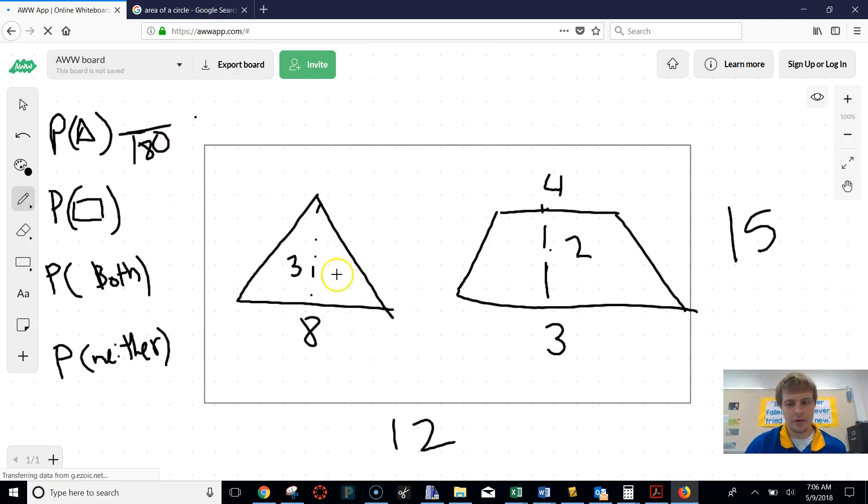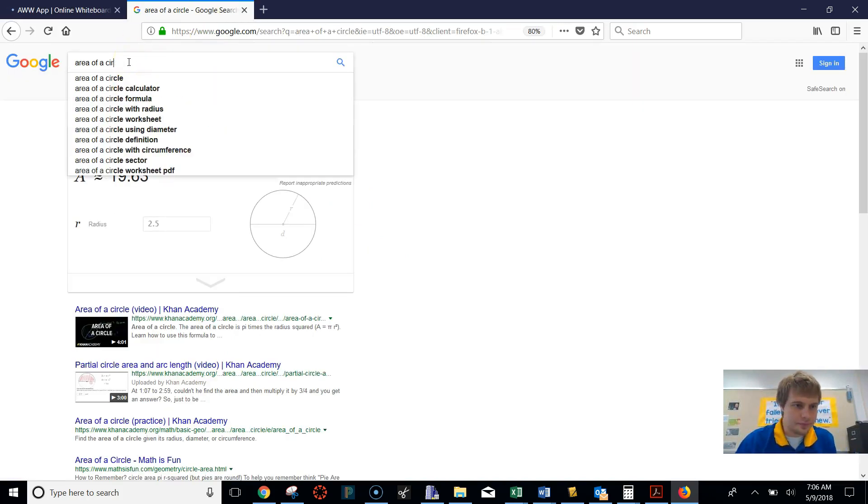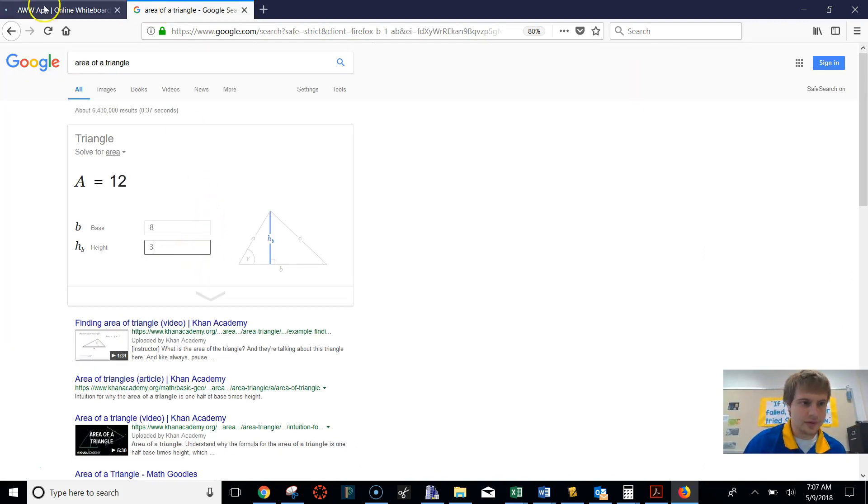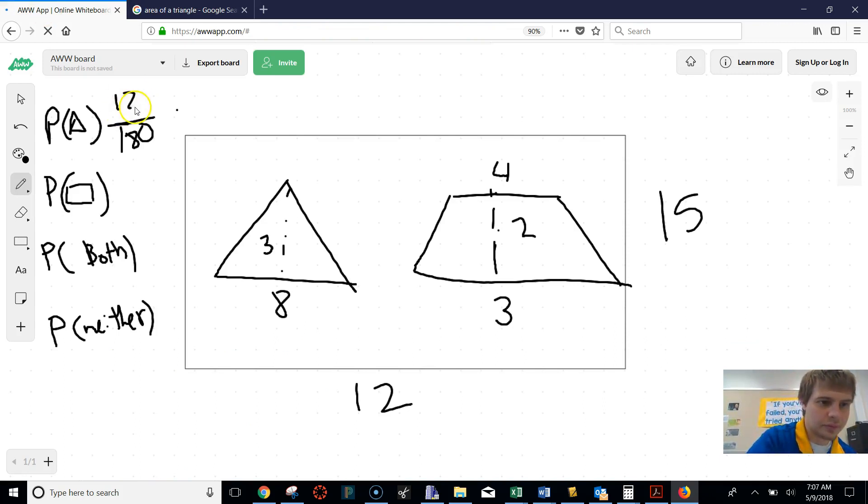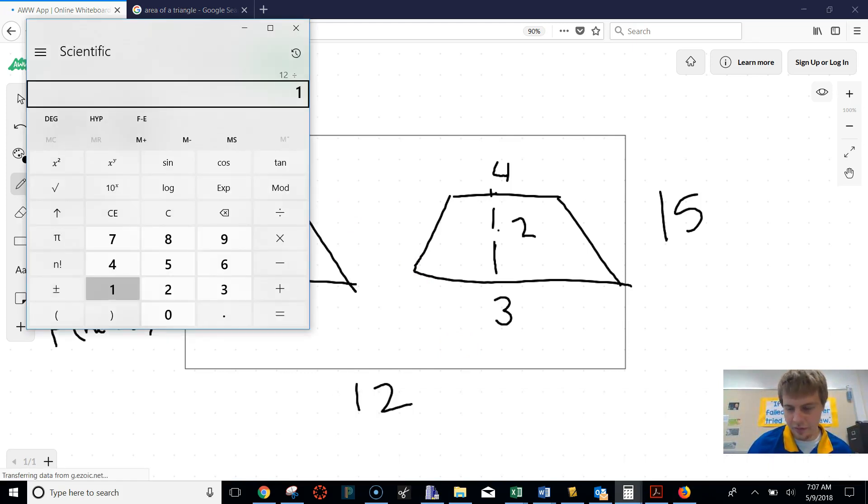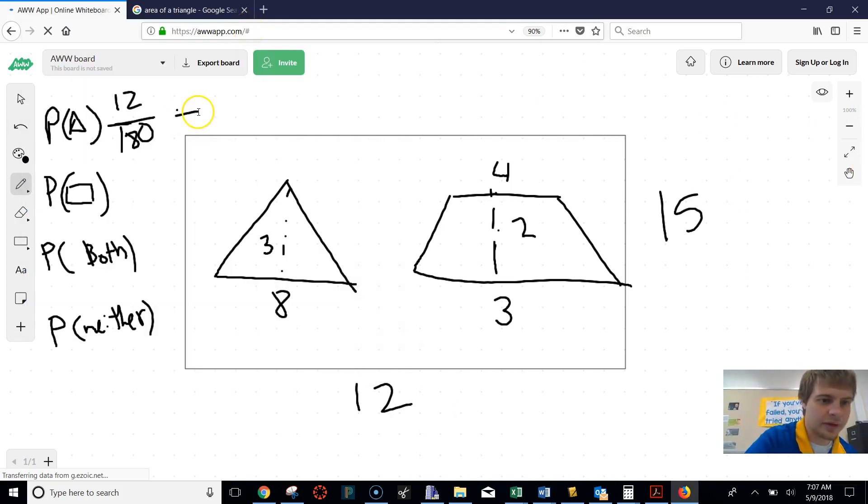And then we want to find the area of that triangle. So I'm just going to go again to Google. And it wants our base and our height. So our base was 8 and our height was 3. So that's 12. And then that would be 12 over 180. So 7%. So not very high, but we do have some percent chance of hitting that. So that would be 7%.